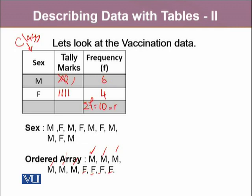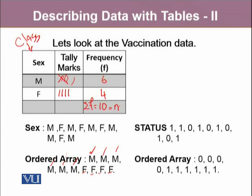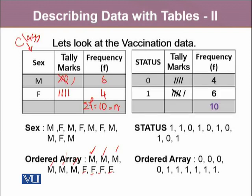Similarly, we can look at the other variable, status, which has possible values 1 and 0. We create an ordered array, and here is the frequency distribution for the variable status, where 0 comes four times and 1 comes six times. In total there are 10 observations, which is sum of f.